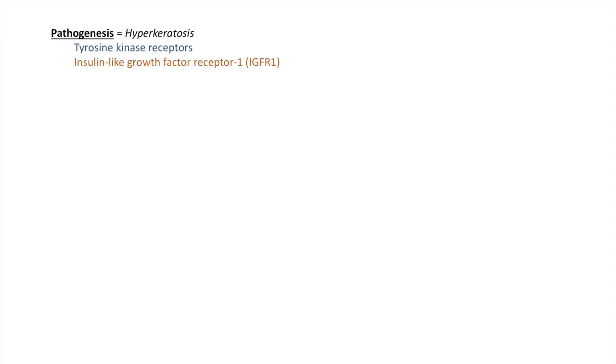So now that we know some of the risk factors and associated conditions for development of acanthosis nigricans, what actually happens during acanthosis nigricans? Well, the exact mechanisms are not well understood. The only thing known for sure is that there is a process of hyperkeratosis. Several signaling pathways have been proposed to play a role, including tyrosine kinase receptors, insulin-like growth factor receptor 1, fibroblast growth factor receptor, and epidermal growth factor receptor.